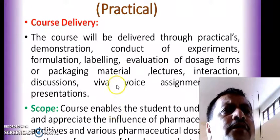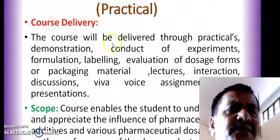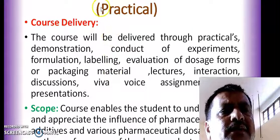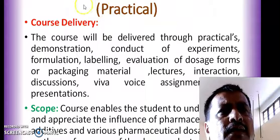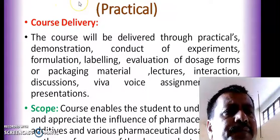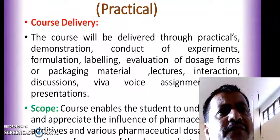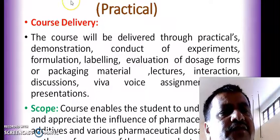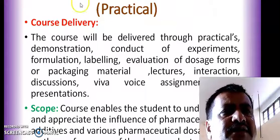Now for the code of Industrial Pharmacy 1: the code given as per PCI is BP506P. BP stands for Bachelor in Pharmacy, 5 stands for your fifth semester, and 06 stands for subject number 6, which is a practical subject.